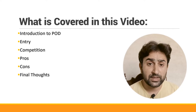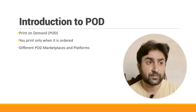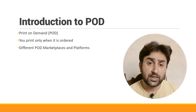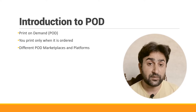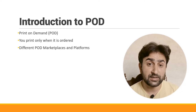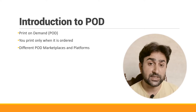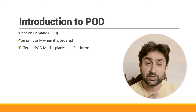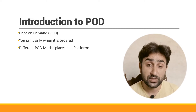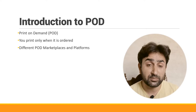POD stands for print on demand. It basically means that products are printed only once they are ordered — they don't exist before an order is placed. So if a shirt has a certain design, it only exists after a person places an order for a specific size and color. Once the order is placed, the print on demand company prints it and ships it to your customers.